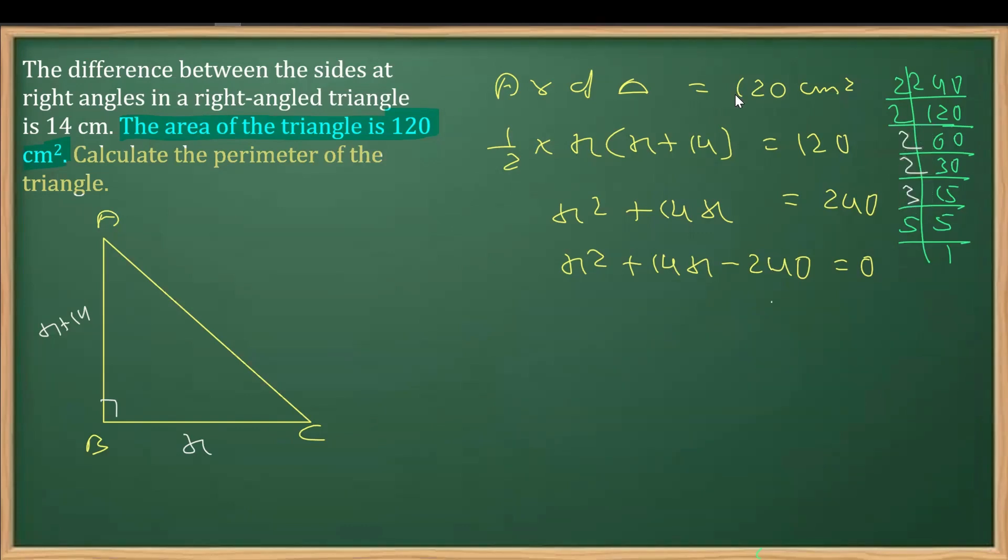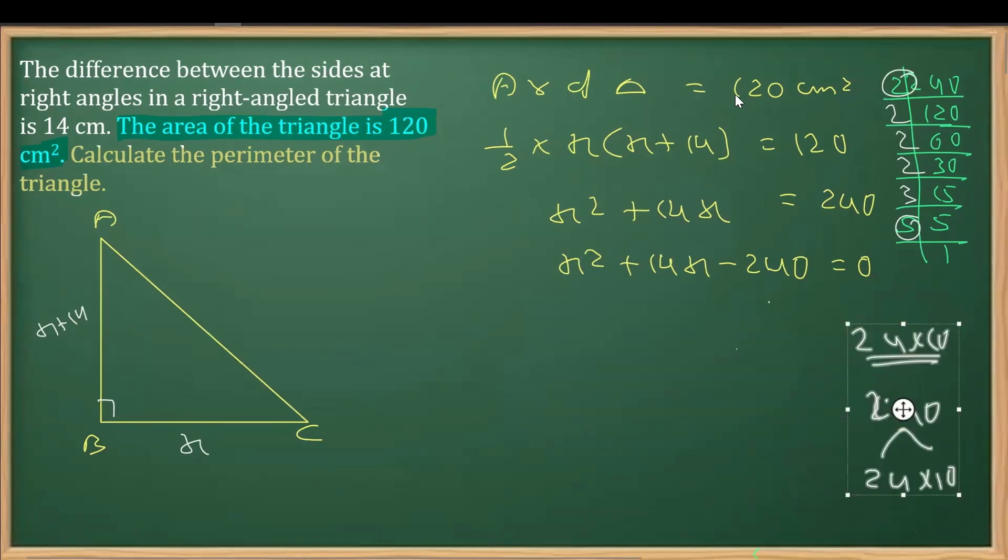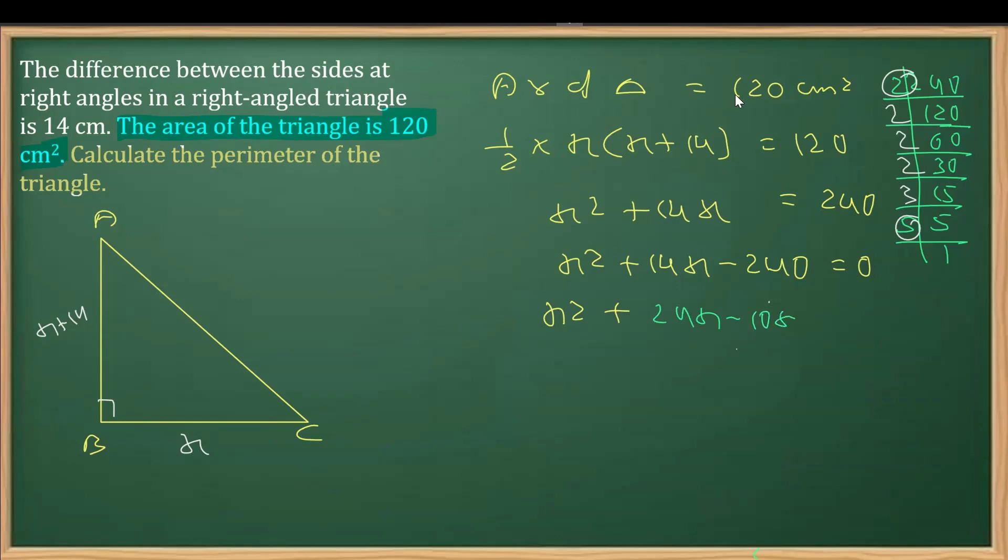So I can see that if I club these factors together, including this two, we have 8, that's 24, right, that's 24. And the other two factors, that is 2 into 5 is 10. So we can see that we can split 240 as 24 into 10 so as to get 14. Now let's factorize it. This is x square. I'm going to write 14x as 24x minus 10x minus 240 equals 0.